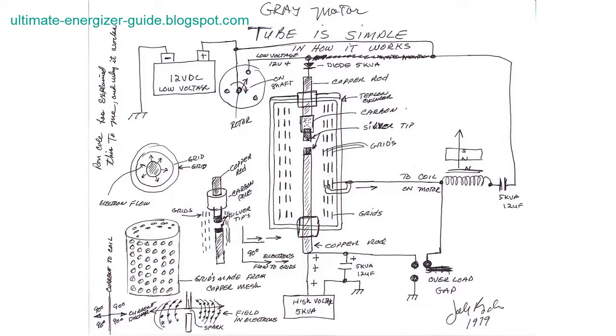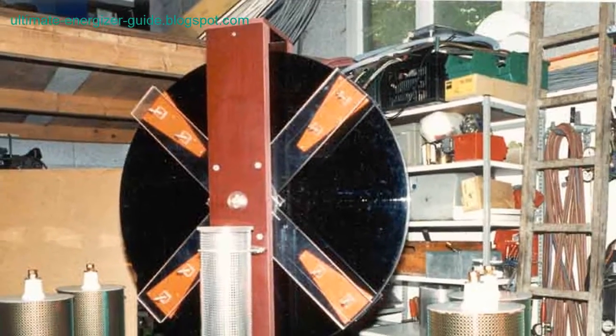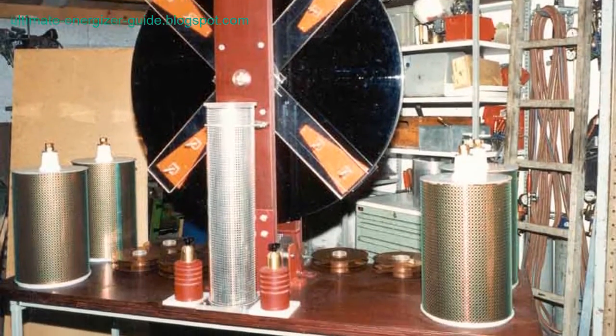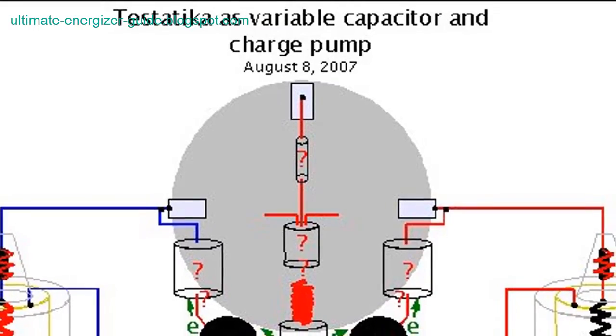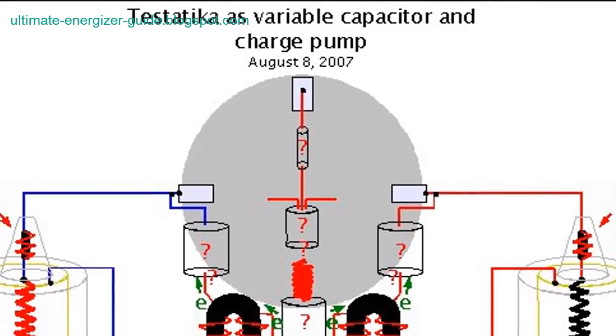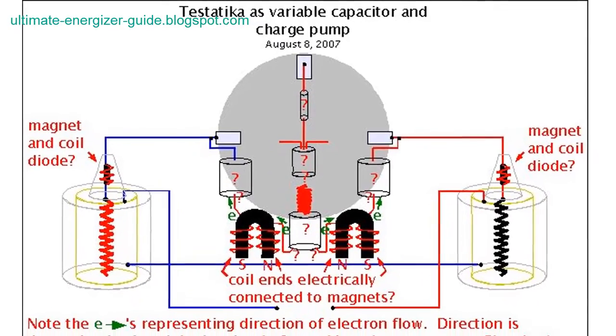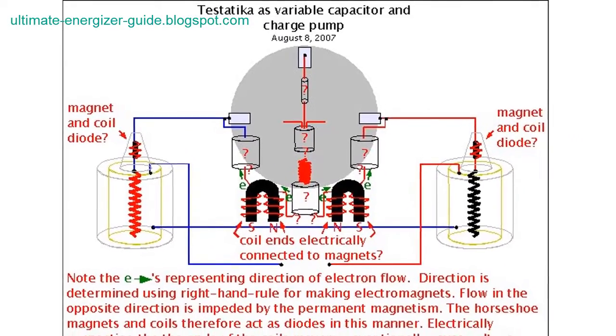These devices transform other forms of energy into electricity to power up your homes. The three proven ways on how to harness free energy are the use of radio and TV waves, use of static electricity, and use of radiant energy. These three ways have been verified to be very efficient, very easy to operate, and cheaper to implement.